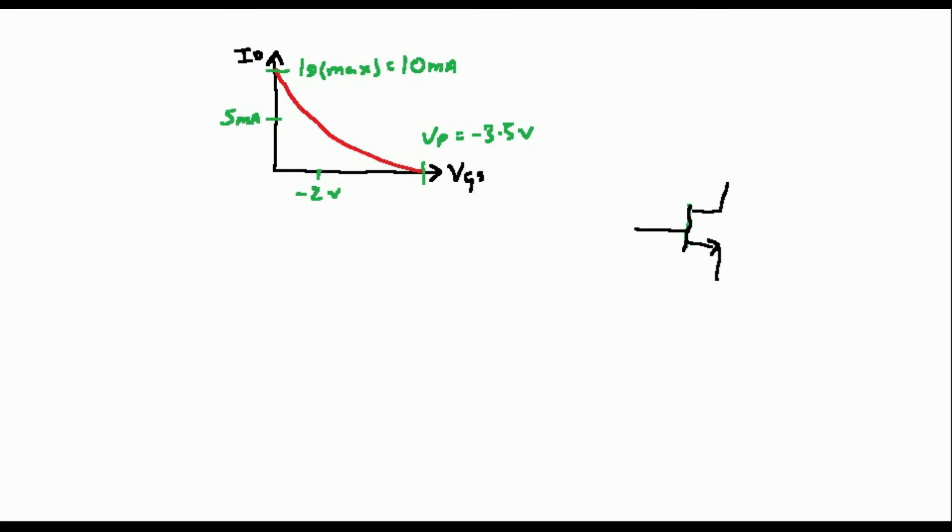A really simple way to bias an FET is called Constant Gate Bias. The idea here is just to apply a required voltage on the gate via a large resistor. This voltage causes a drain current to flow which we can then use to bias the device.